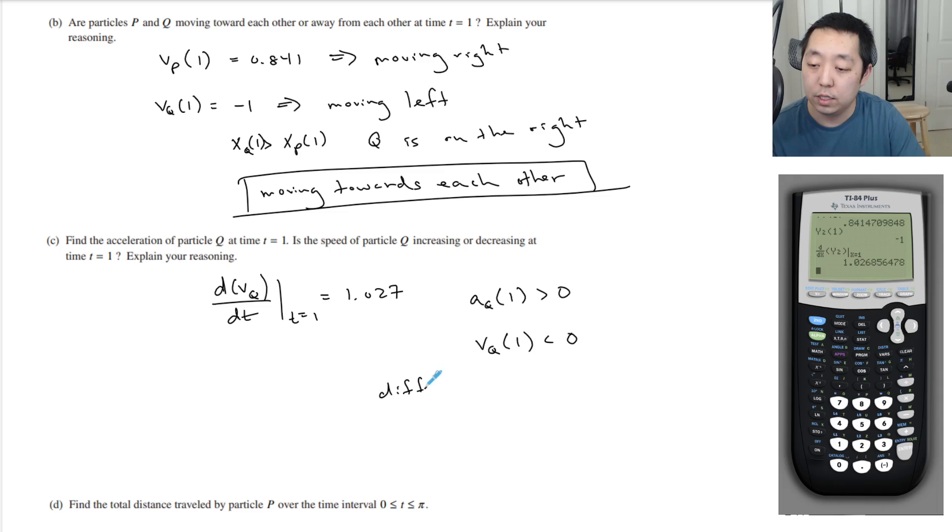Because they have different signs, the velocity and acceleration have different signs, that means that it is slowing down because it is moving to the left and accelerating to the right.